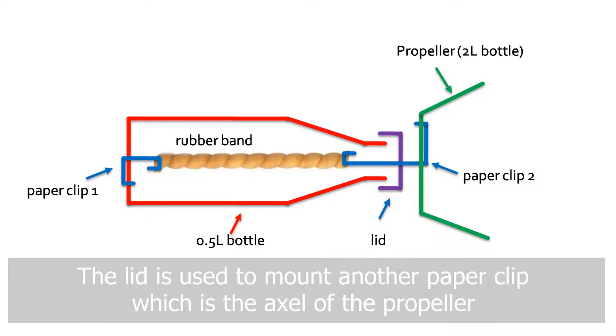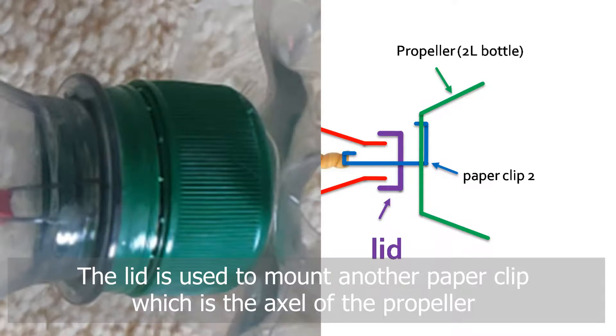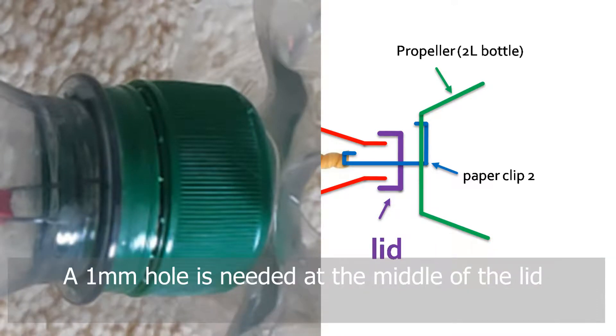The lid is used to mount another paper clip, which is the axle of the propeller. A one-millimeter hole is needed at the middle of the lid.